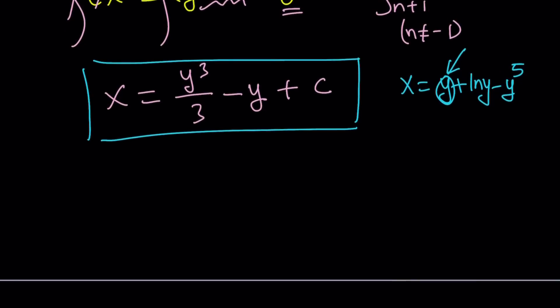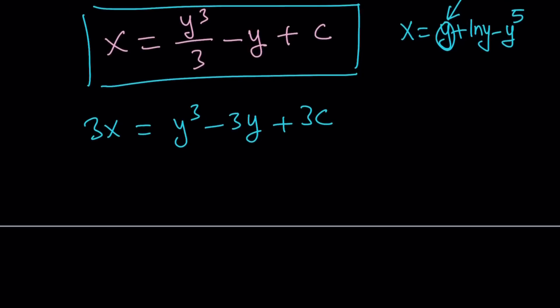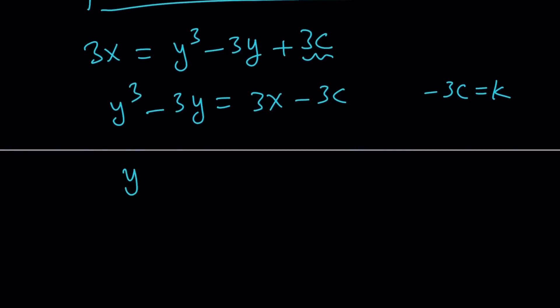But here, we can do something. Here's what we're going to do to make it a little nicer looking. I'm going to multiply both sides by 3. So, 3x equals y cubed minus 3y plus 3c. Hopefully, you see what I see. I don't like this 3c. I'm going to subtract it from both sides. And then, negative 3c, I'm going to replace it with another constant. I'll call it k. It's better to call it k because it's simpler.